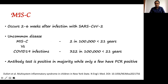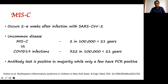MIS-C has been present for the past two years since the pandemic started. It typically affects children two to six weeks after infection with SARS-CoV-2. It is an uncommon disease — out of 322 children who develop COVID infections, only two went on to develop MIS-C. So typically less than 1% of children with COVID infection would have MIS-C. The initial definition required antibody positivity, PCR positivity, or an exposure.